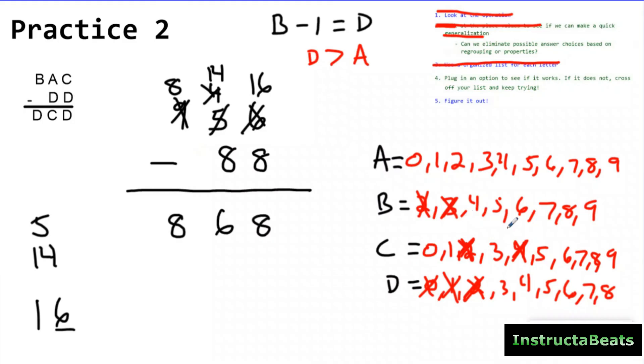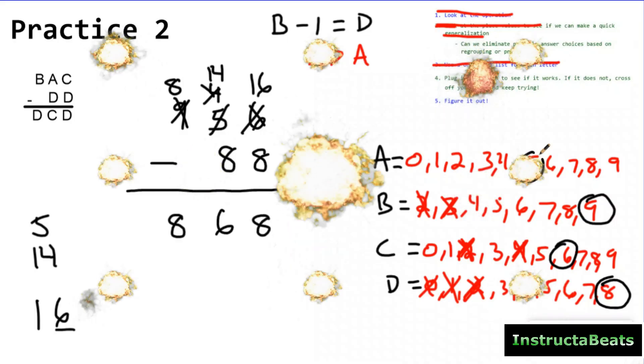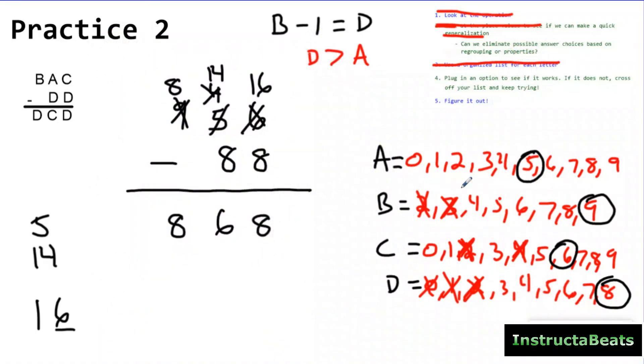So actually, just kind of by the luck of the draw, the fourth one I did worked. Eight has to be D, which would make C six, which would make B nine, which would have made A five. So again, I use my place value generalization. And actually, this part right here that I noticed at the beginning was really, really important because that allowed me when I guessed what D is to also know what B would have to be. This relationship.